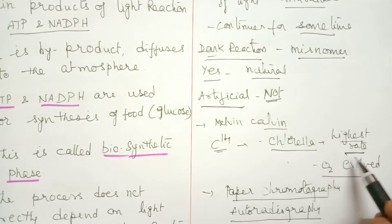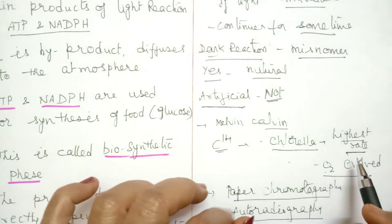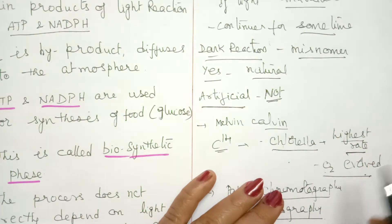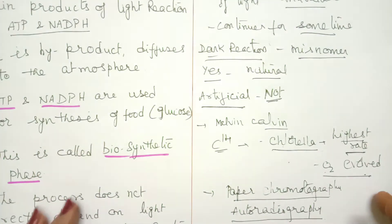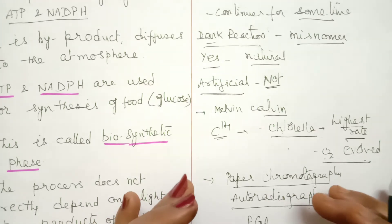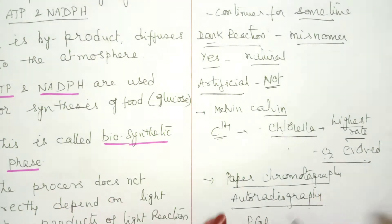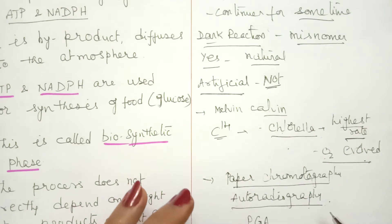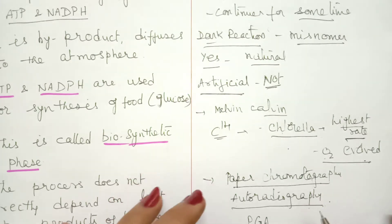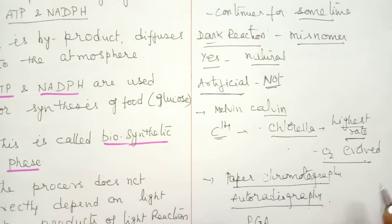The rate of photosynthesis during the light phase can be measured by the amount of oxygen evolved, and Chlorella evolves the highest amount of oxygen. Being aquatic, it is also easy to measure the oxygen evolved. Calvin studied this pathway using two techniques: paper chromatography and autoradiography. Paper chromatography helps in the separation of different compounds based on the number of carbon atoms present, while autoradiography uses radioactive substance to detect wherever carbon is present in the compounds formed.